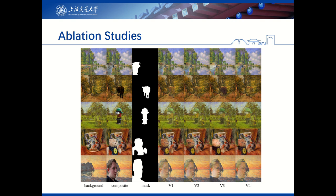The ablation study investigates the effectiveness of each component in our method. We first remove all discriminators and the residual encoder to obtain a basic network with multiple-scale AdaIN, referred to as v1 in Table 2. Then we add the pixel-wise image discriminator D_M, referred to as v2. Furthermore, we add the residual encoder E_R to form the dual encoder generator, referred to as v3. Finally, we apply pixel-wise feature discriminators to reach our full-fledged method, referred to as v4.